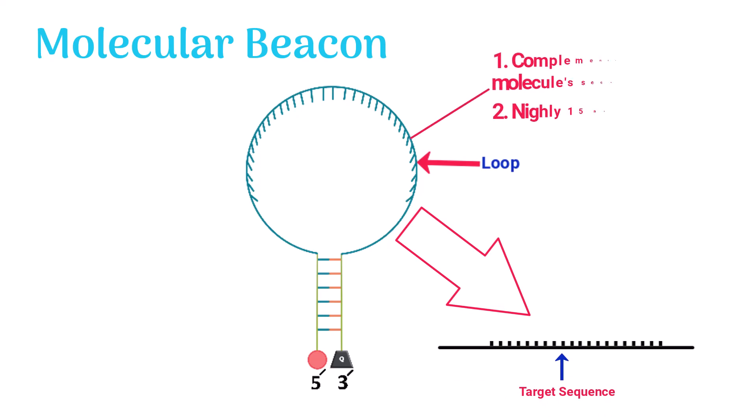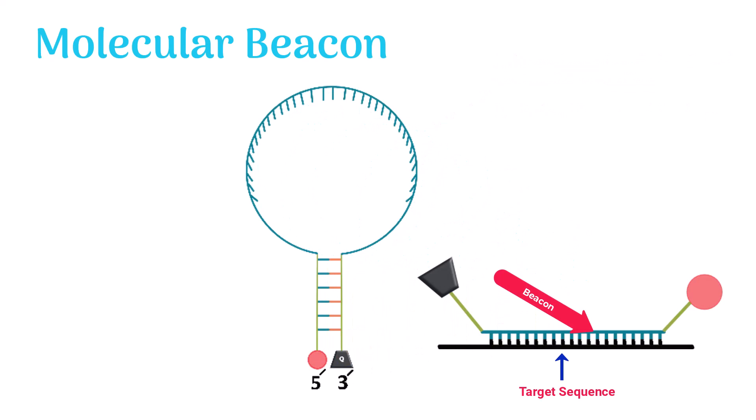The loop sequence is complementary to the target molecule sequence and it is nearly 15 nucleotides long. When the beacon binds to its target sequence, the loop structure opens up. This causes the five prime reporter and the three prime quencher to move apart from each other.